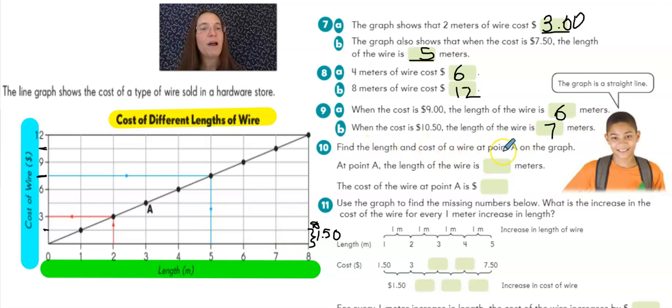Find the length and cost of a wire at point A on the graph. Here's A. A is three meters in length. I can drop down and see that. And at point A, I can also come over here and find that it's halfway between three and six. Three plus a dollar fifty would be four dollars and fifty cents.